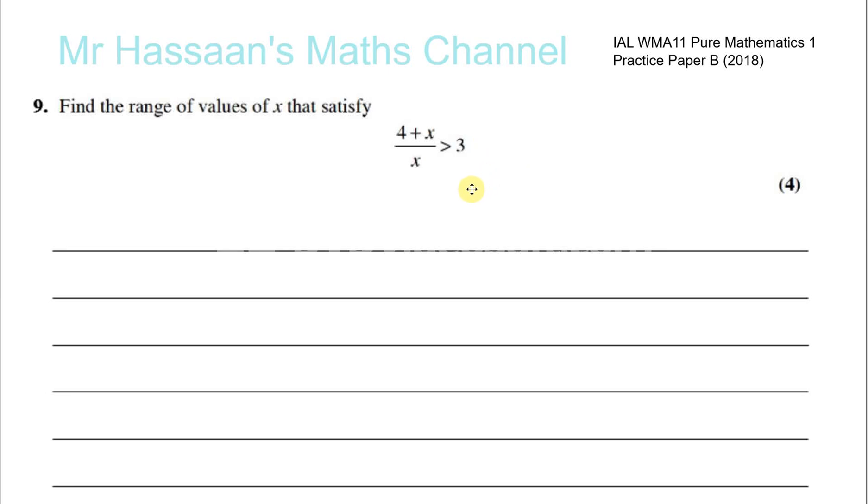Question number 9 from the practice paper B, Pure Mathematics 1 from International A Level. Here we're given an inequality that we need to solve: 4 plus x divided by x is greater than 3.